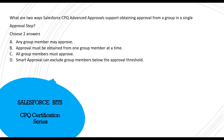Option C: All group members must approve — yes, I think this is one of the answers, because otherwise why would you send it to the group instead of directly to a user? Option D: Smart approval can exclude group members below the approval threshold — I don't think so. Let me confirm: the correct answer is A and C — any group member may approve, and all group members must approve. Let me take you to the reference.